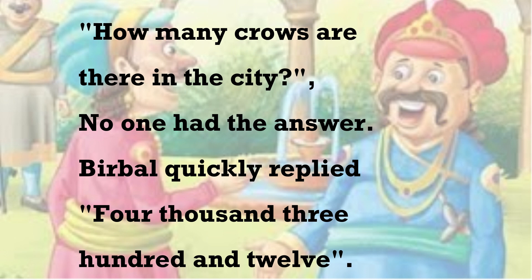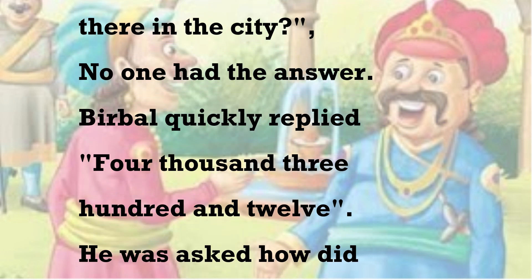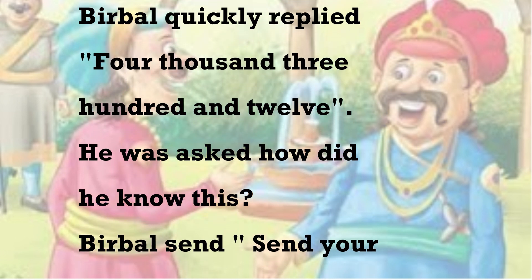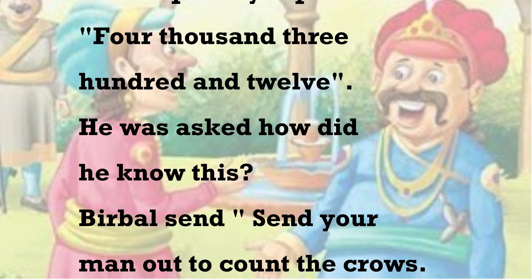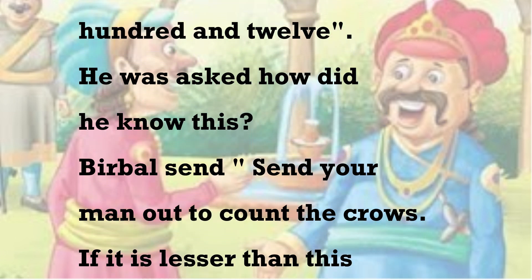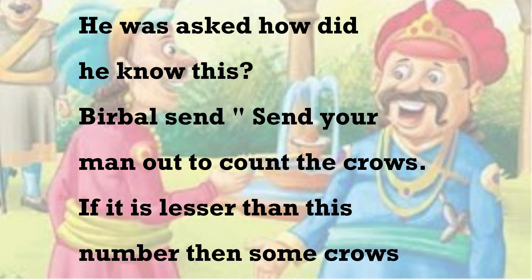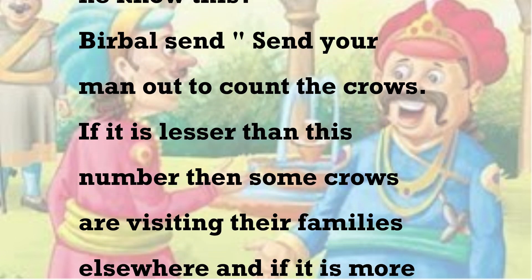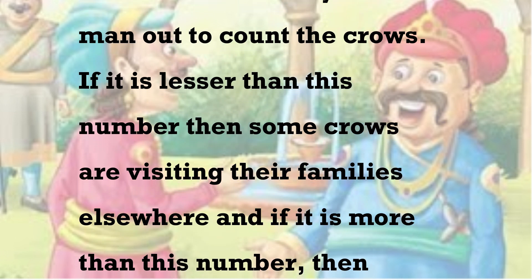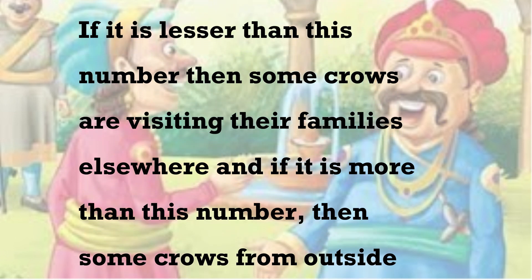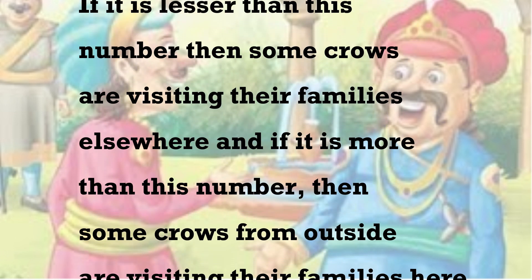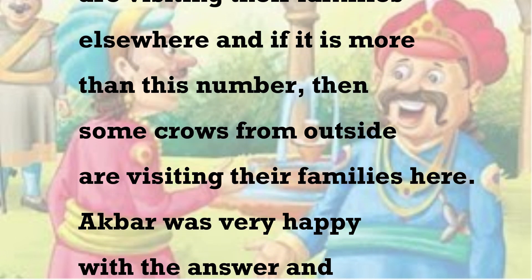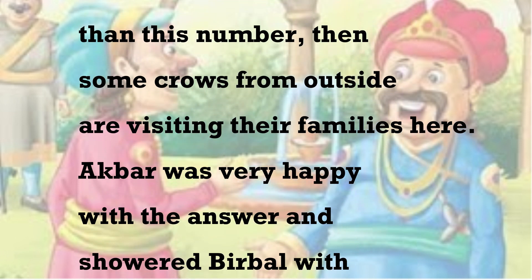Bilber quickly replied: 4,312. He was asked how he knew this. Bilber said, send your men out to count the crows. If it is lesser than this number, then some crows are visiting their families elsewhere. And if it is more than this number, then some crows from outside are visiting their families here.